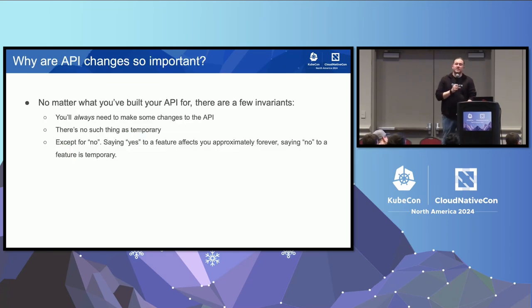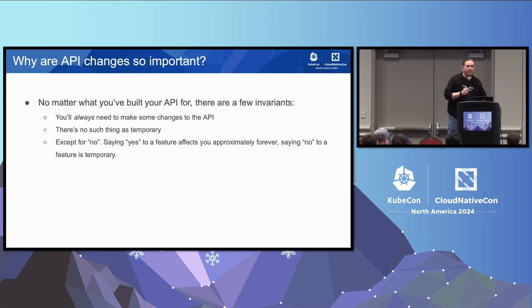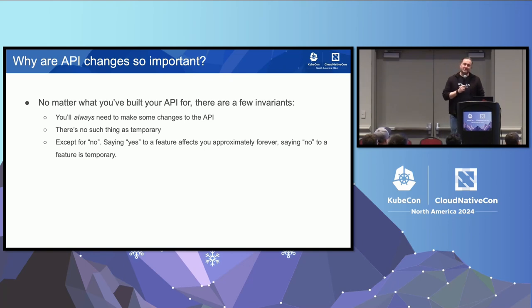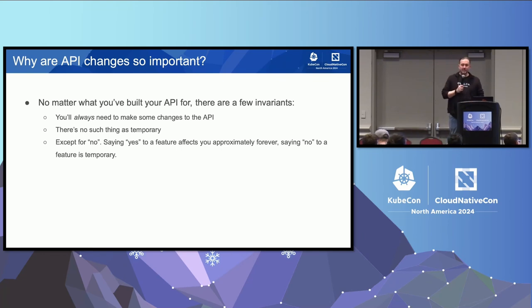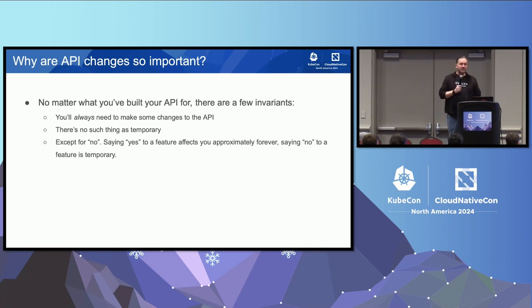Why are API changes so important? Software is a living thing — if you don't keep building it, it bit-rots and dies. You need to add more features to handle things you never thought of. I always like to say there's no such thing as temporary except for saying no. Saying no is temporary, but saying yes is forever — because once you say yes, that API is in your API and it is there effectively forever.